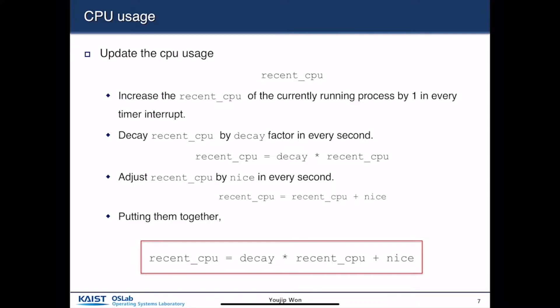The concept of recent_cpu represents how much of the CPU cycles the process has been using. A timer interrupt increases recent_cpu of the currently running process by one at every timer interrupt. Even though a process has been using the CPU a lot of times long before, we need a mechanism to discount that fact.